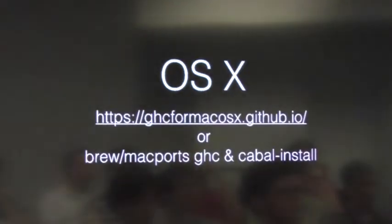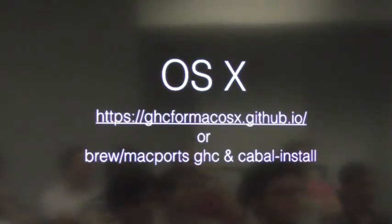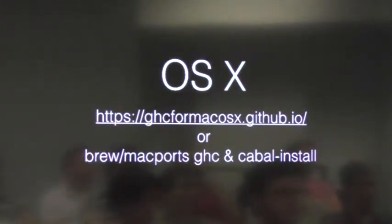OSX has a pretty good story because everyone's got Macs. GHC is available as a binary distribution for OSX, or you can use Haskell Platform. Otherwise, there's GHC for Mac OSX, which installs GHC and Cabal as applications and does some magic to link them into your environment so they behave like regular CLI tools. Or you can install GHC and Cabal using Homebrew or MacPorts. Currently Homebrew and MacPorts are a couple of months ahead of GHC for OSX, but you won't notice the difference. GHC for OSX is maintained by some of the Haskell core devs so it's always going to be correct.